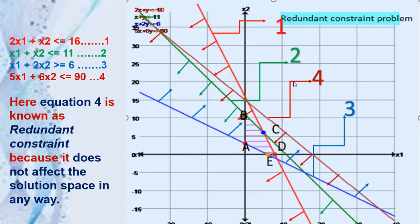That means even though you remove this fourth constraint, it is not changing the feasible region or affecting the feasible region. That's why here equation 4 is called the redundant constraint.